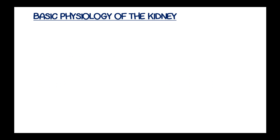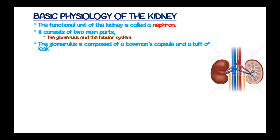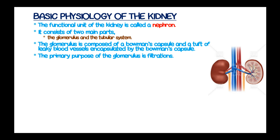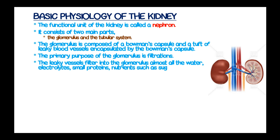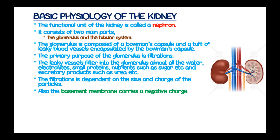The functional unit of the kidney is the nephron, and it consists of two main parts: the glomerular part and the tubular system. The glomerulus is composed of a Bowman's capsule and a tuft of leaky blood vessels encapsulated by a Bowman's capsule. The primary purpose of the glomerulus is filtration. The leaky blood vessels filter into the glomerulus almost all the water, electrolytes, small proteins, nutrients such as sugar, and excretory products such as urea. Filtration is dependent on the size and charge of the particles, and the basement membrane carries a negative charge, hence preventing negatively charged particles from passing through.